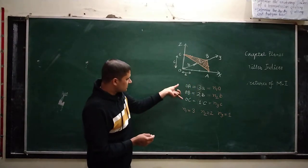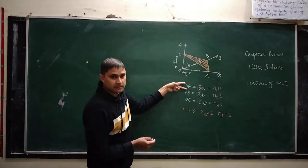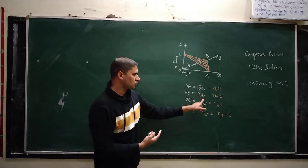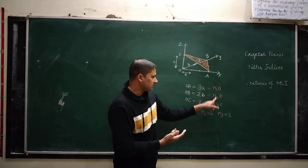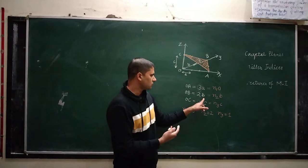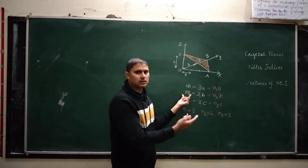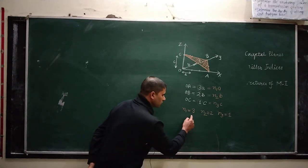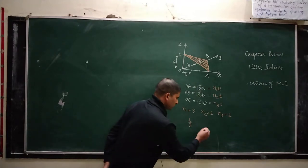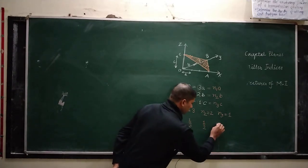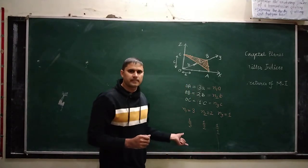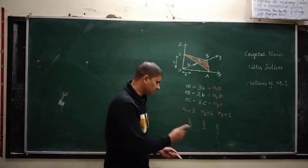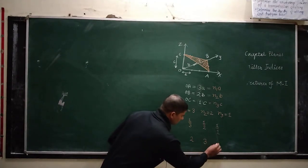Then you will take the reciprocal — this is the next step. So if I take reciprocal of 3, it will give me 1 by 3. The reciprocal of 2 will give me 1 by 2. And the reciprocal of 1 will be 1 by 1. Now I will solve these fractions. The LCM of 3, 2, and 1 will be 6. And if you solve it then you will get 2, 3, and 6.